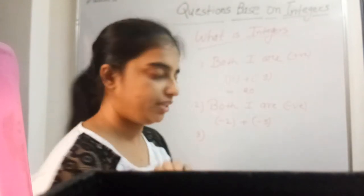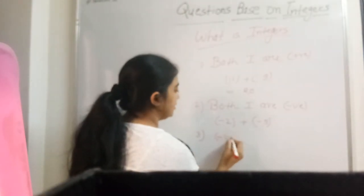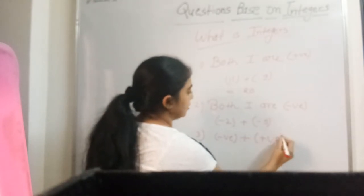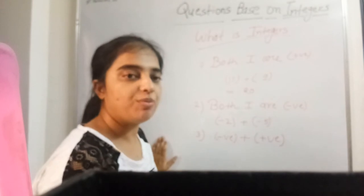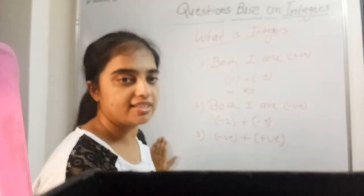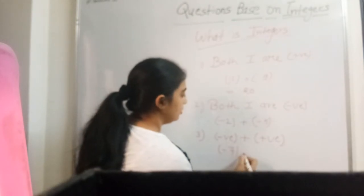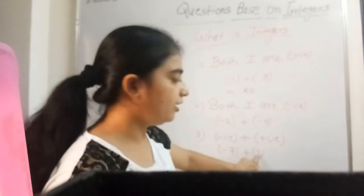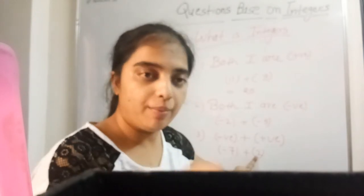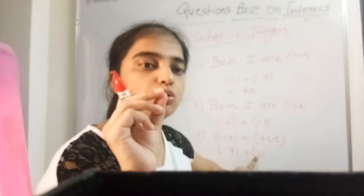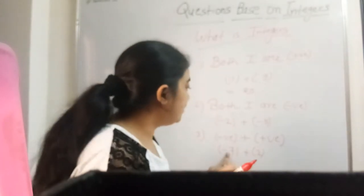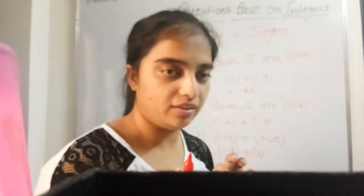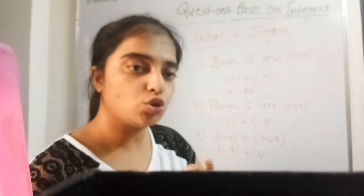Third condition: ek negative integer aur ek positive integer. Ek negative integer ka addition aap ek positive integer ke saath karte hain. Jab aap kisi negative number ko ek positive integer ke saath add karte hain — like minus 7 plus 2. Minus 7 aapka ek negative integer hai, uska addition karna hai ek positive integer 2 se. So remember: jab bhi minus plus hota hai, to subtraction hoga. Minus plus is always minus. So minus 7 plus 2 — the answer is minus 5.